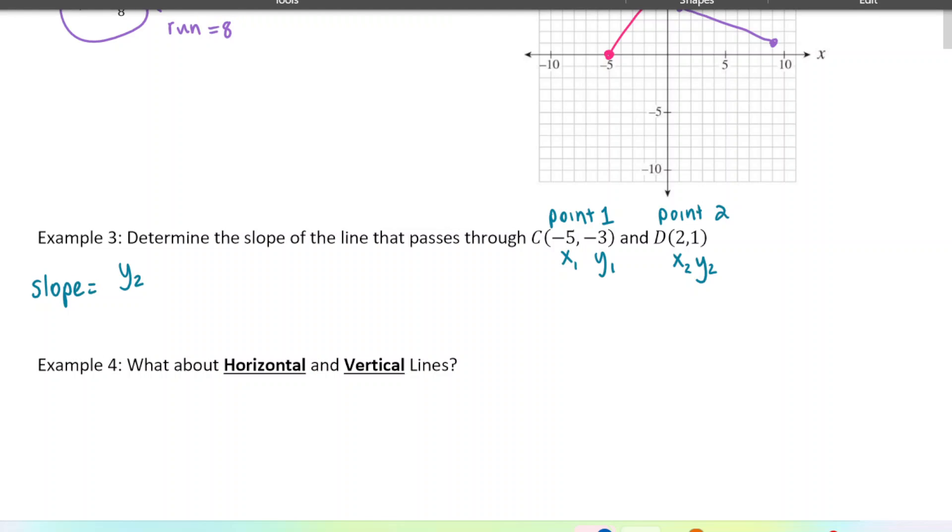So I'm going to use y2 minus y1 over x2 minus x1. Again, the 1 and the 2 are just referring to which points you have. So the y values are these ones. And then the x values are these ones. It actually doesn't matter which one is point 1, which one is point 2. As long as you use the formula, you'll get the same answer. So y2 would be 1 minus, and then we have negative 3. And then x2 is 2. And we'll have minus negative 5. So this is 4. And this is 7. So our slope is 4 over 7. You should reduce if you can, but here 4 over 7 cannot be reduced. So that's our slope.